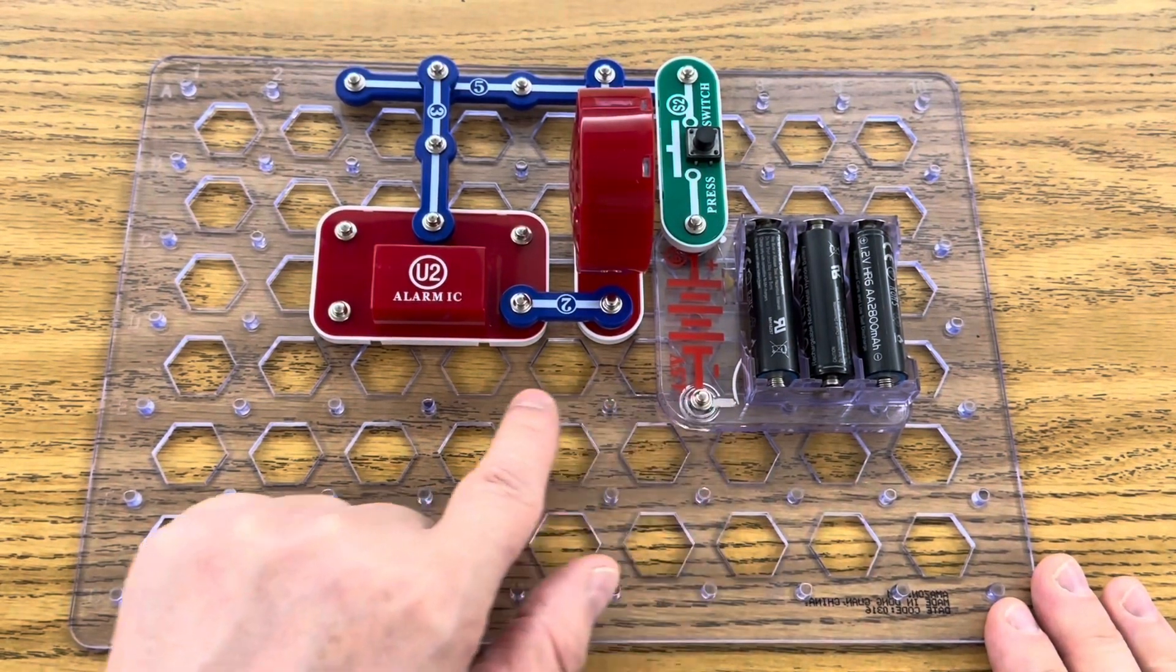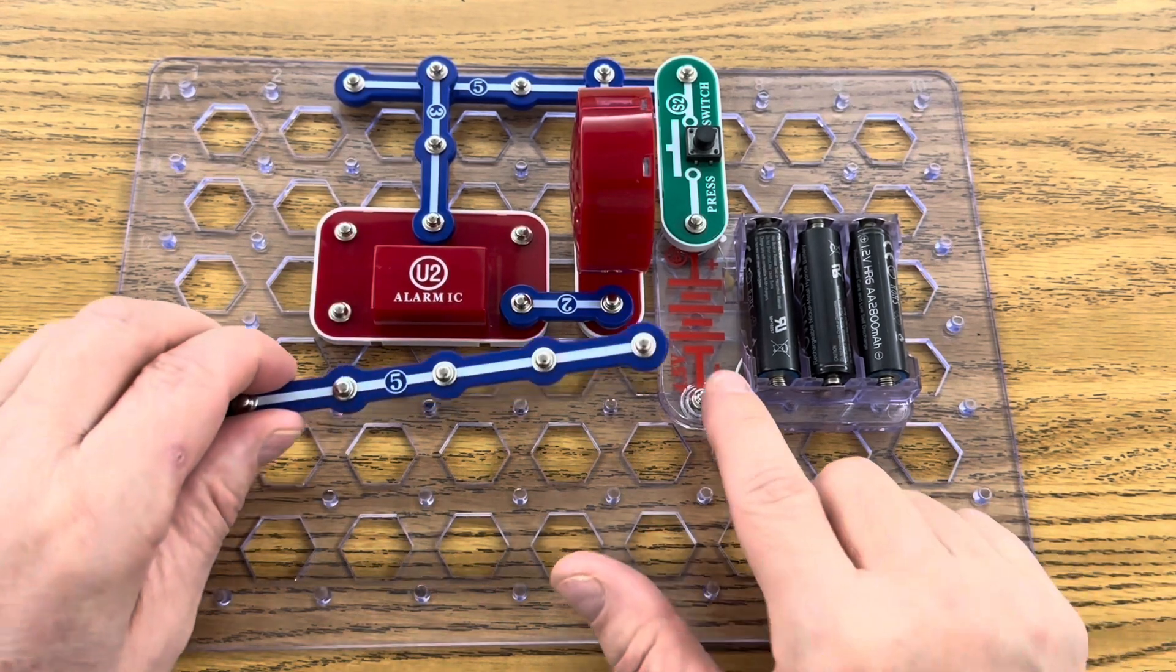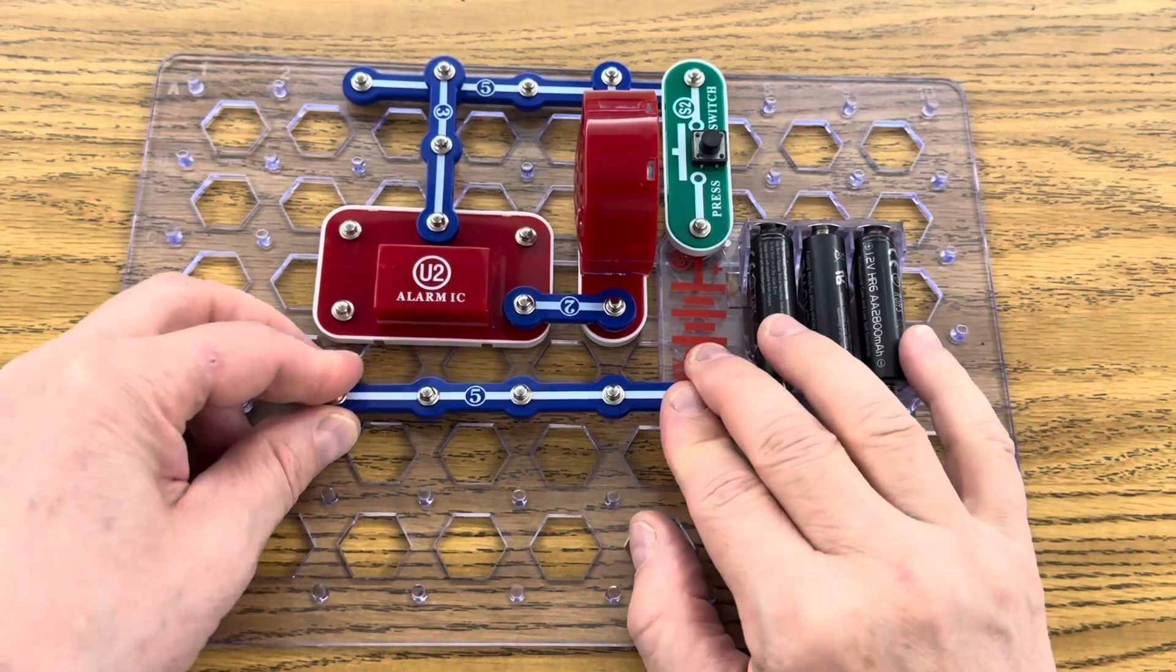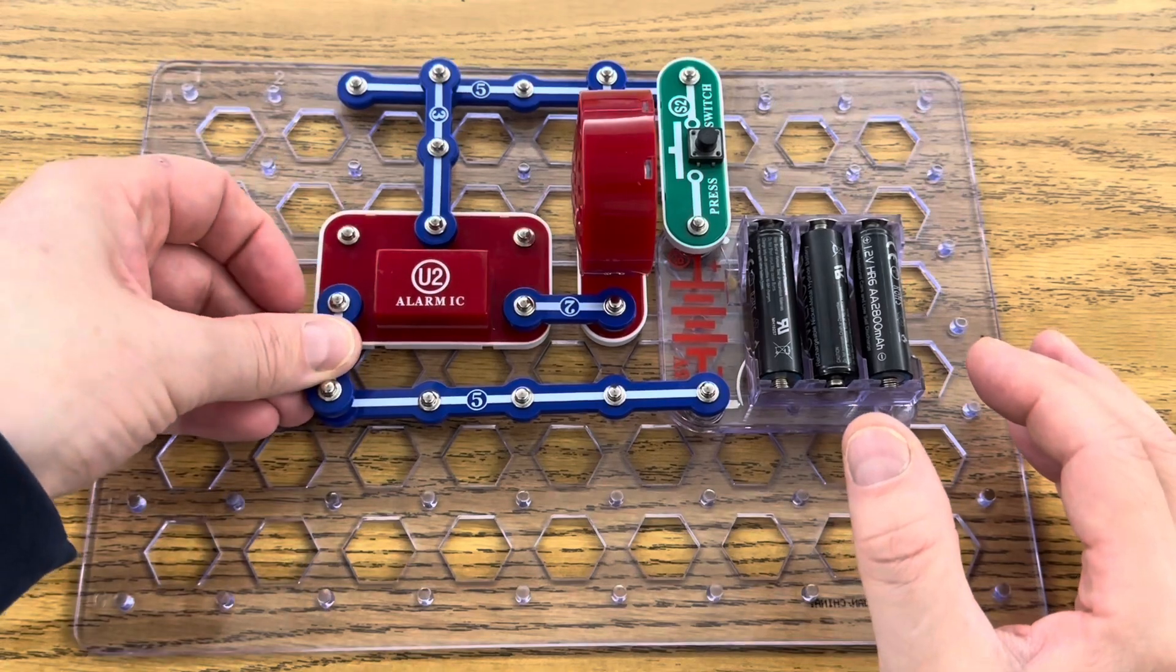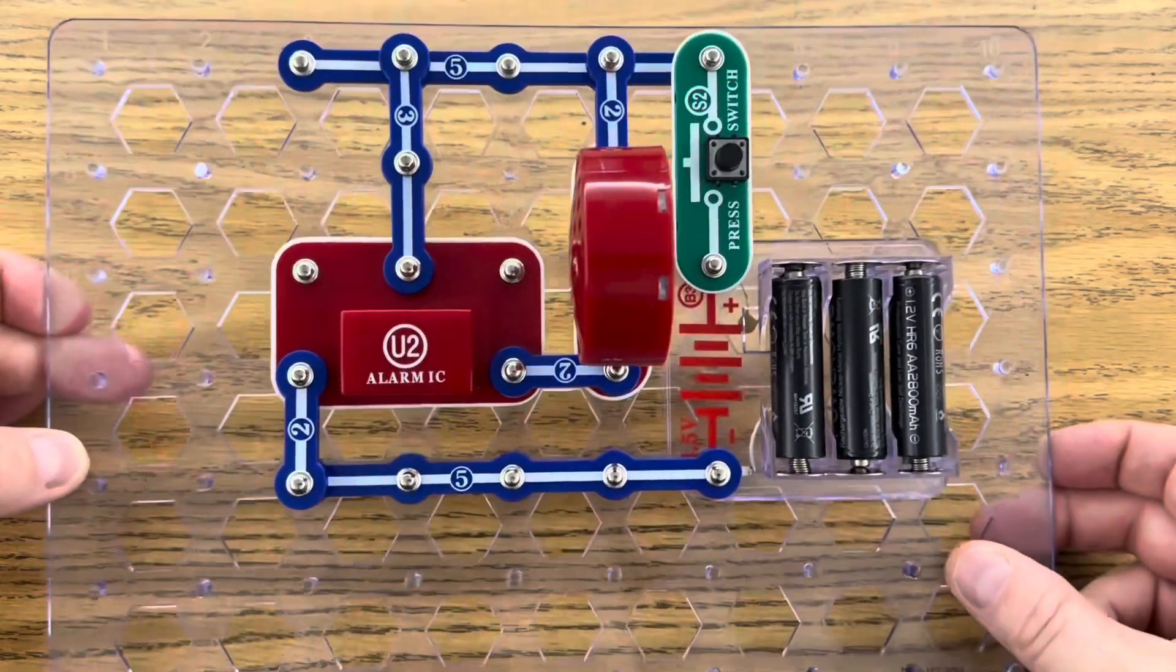Now all that's left is I have to close the circuit. So I'm going to take another five snap wire. I'm going to run it from the negative terminal on my battery holder and then I'm connected to the alarm right here. So now my completed circuit looks like this.